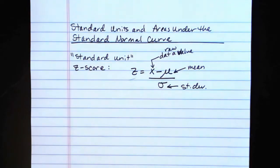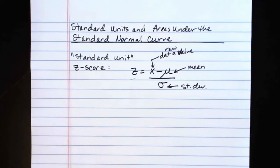what you will find out is that just by that unit conversion, every single normal curve boils down into one normal curve. That's called the standard normal curve. Just by virtue of making this conversion from raw data values to the standard unit of Z-scores.